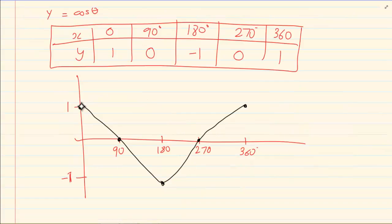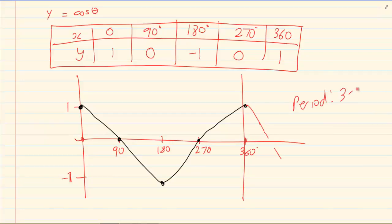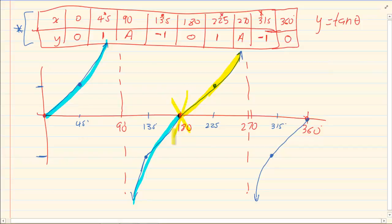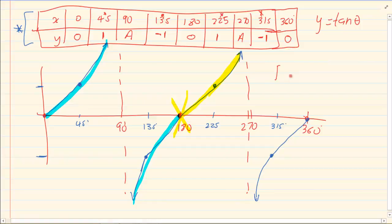Looking at a cos graph, one complete cycle starts at 0 and ends where it begins repeating itself, so one complete cycle is 360 degrees for a cos graph. For a tan graph, it starts repeating itself at 180 degrees. So the period for a tan graph is 180 degrees.